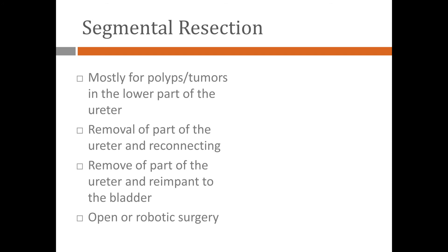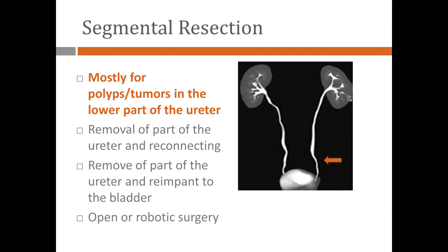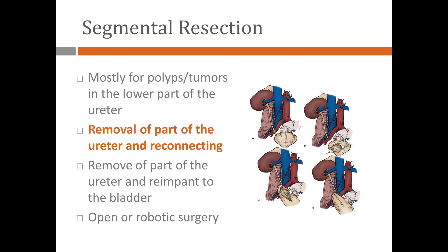Regarding segmental resection — trying to remove part of the ureter involved with cancer — this is usually reserved for very specific situations. For example, if the tumor is at the bottom of the ureter, and in some cases for tumors in the middle. It's very rare to do it for tumors in the pelvis of the kidney. We remove that part of the ureter and connect the ureter back to the bladder.